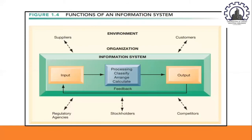As shown in figure 1.4, the process includes classifying, arranging, and calculating. An information system contains information about an organization and its surrounding environment. These three basic activities — input, processing, and output — produce the information organizations need. Feedback is output returned to appropriate people or activities to evaluate and refine the input. Environmental factors such as customers, suppliers, competitors, stockholders, and regulatory agencies interact with the organization and its information system.